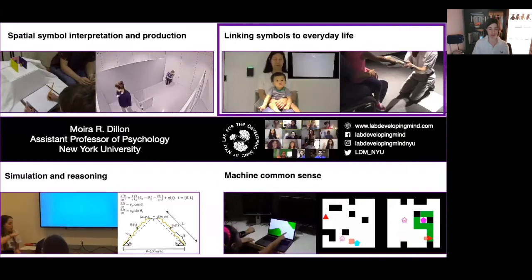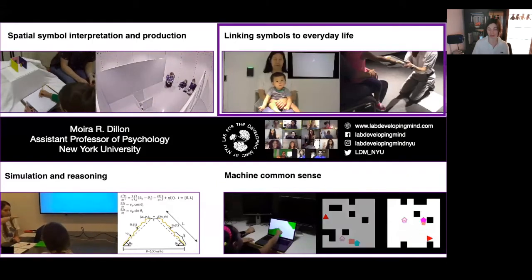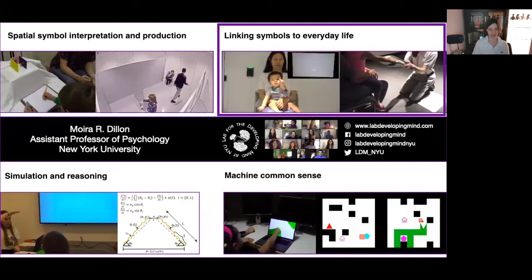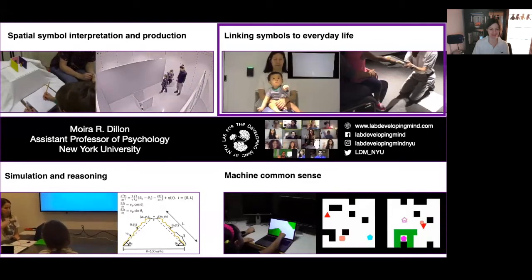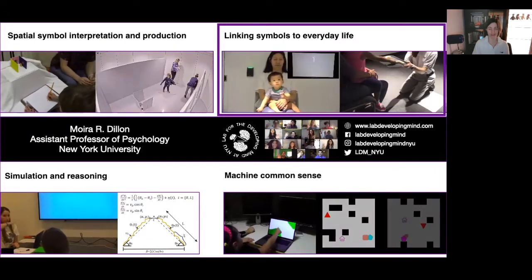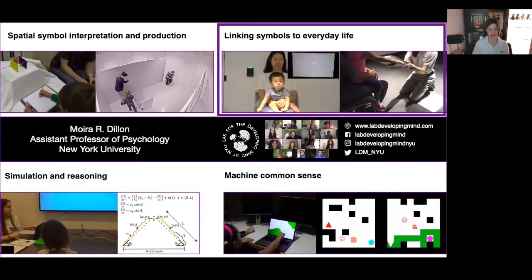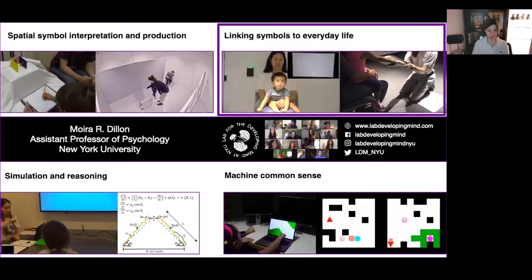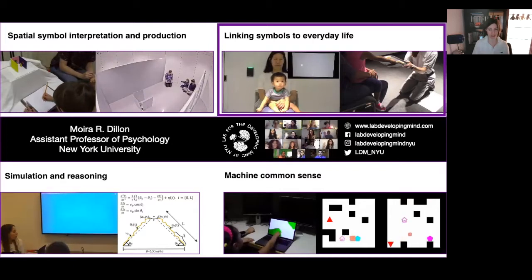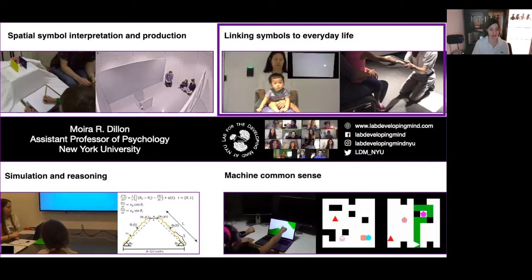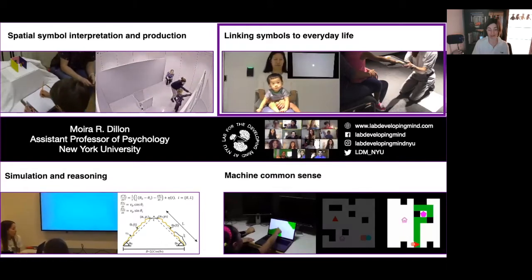In another line of research, we're exploring how infants link symbols, like language, to the different kinds of stuff they encounter in everyday life, like objects and places. For example, when infants hear language, do they assume that language is picking out a kind of object or a kind of place? If infants do intuitively expect language to refer to objects, can they nevertheless use language to learn about kinds of places, for example, fields versus rooms, just as they use language to learn about kinds of objects?